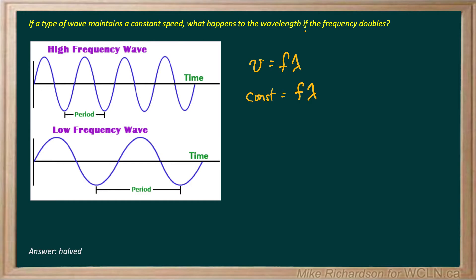Now we want to know what happens to the wavelength if we double this frequency. So if I rewrite my equation, wavelength is the velocity, that constant, divided by frequency, and we see an inverse relationship.